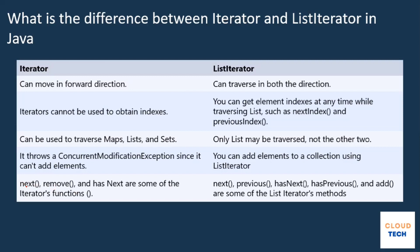The last point is about available methods. Iterator has methods like next(), remove(), and hasNext(). But list iterator supports movement in both directions, so it has methods for both next() and previous(). This is a very important question for the interview.